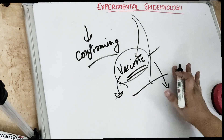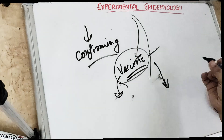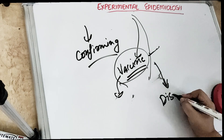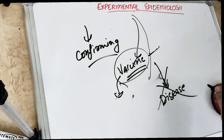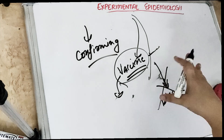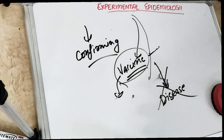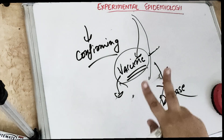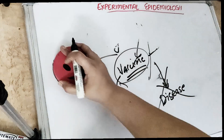Basically, experimental epidemiology is about removing or preventing the disease — either by addressing the risk factor, or by evaluating the effectiveness and efficiency of health services. We have two kinds of studies in experimental epidemiology: animal studies and human trials.